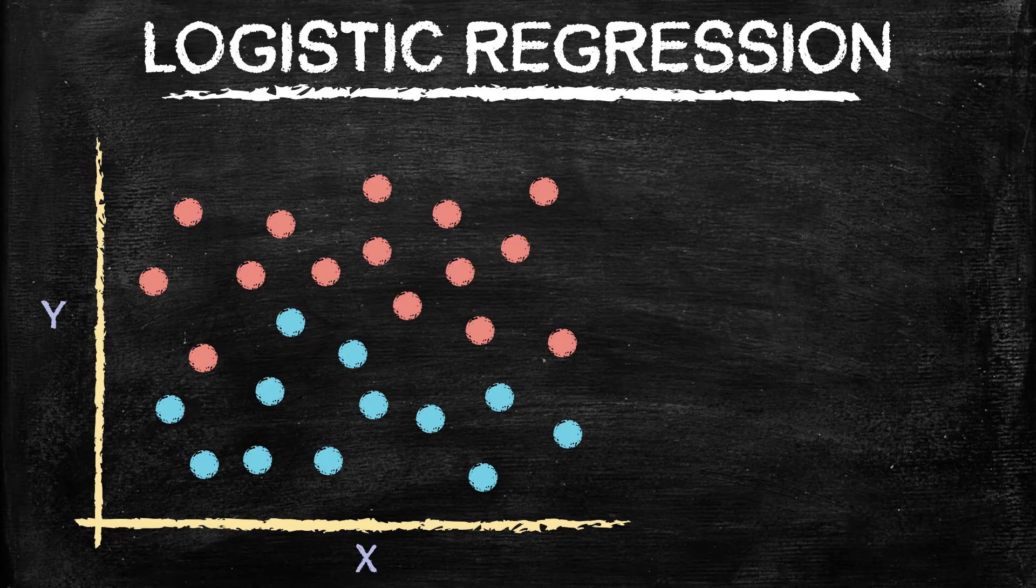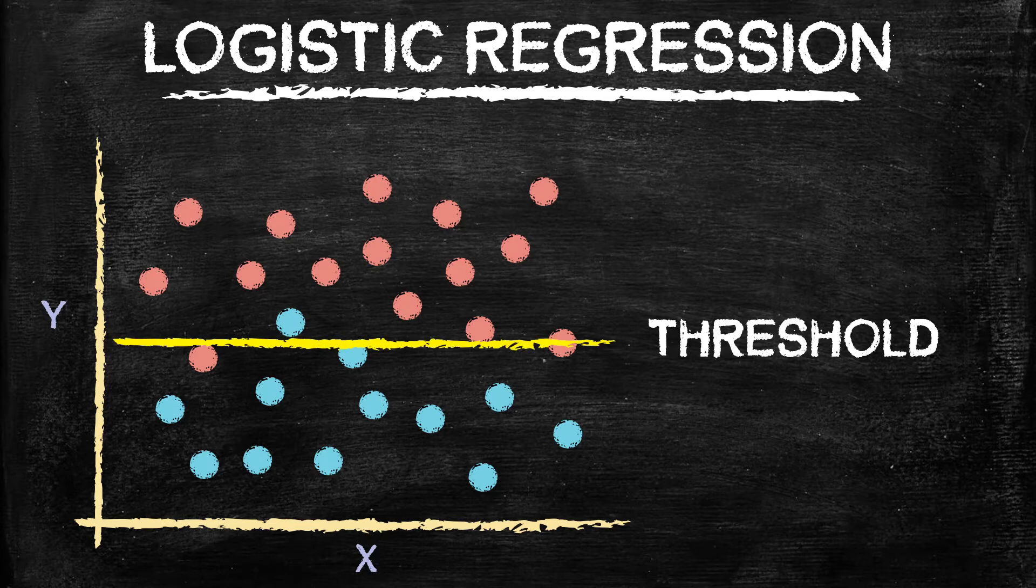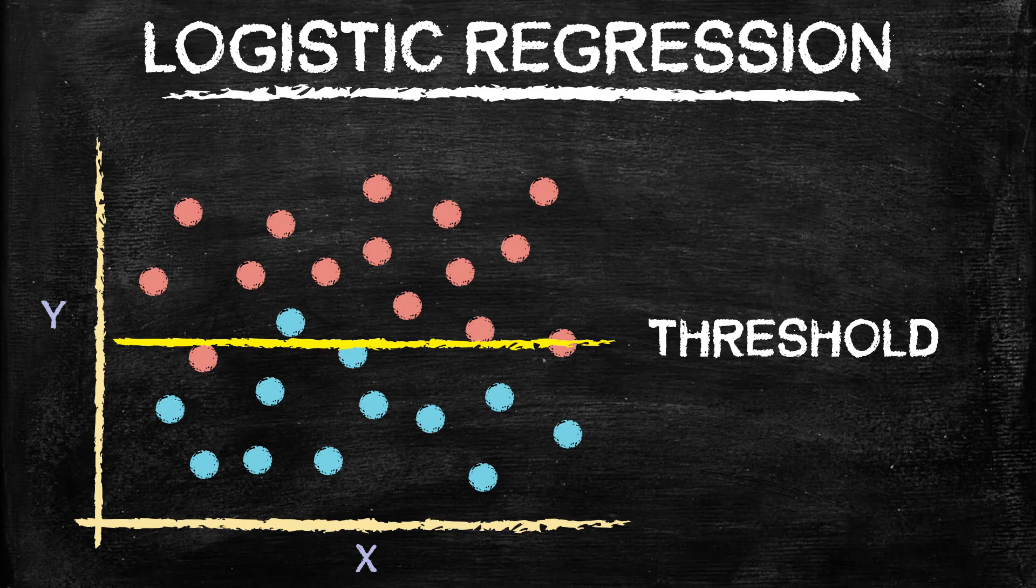So instead of using that line, we are going to do something like thresholding, where we're just trying to get some threshold value. Say anything above it is going to be the red class, anything below it is going to be the blue class. And obviously, there's going to be some errors in between there, but we're trying to just minimize those errors and come up with the best possible solution.